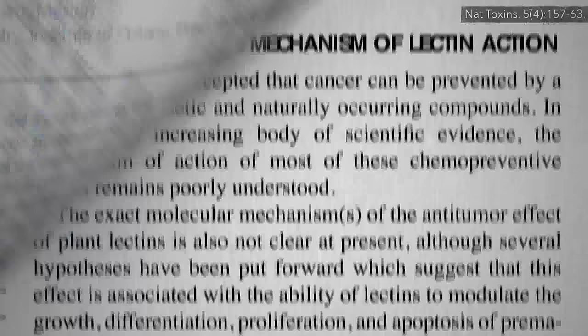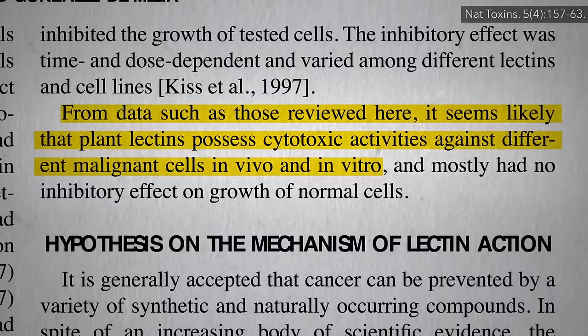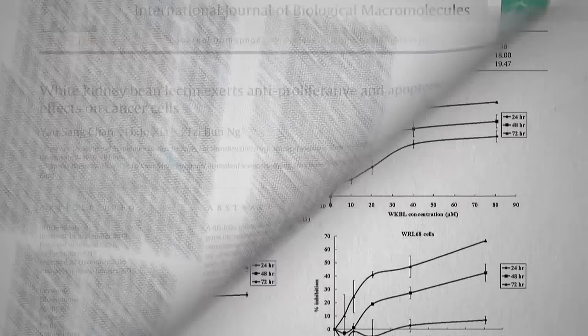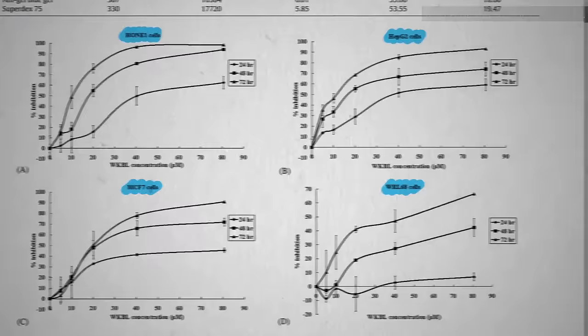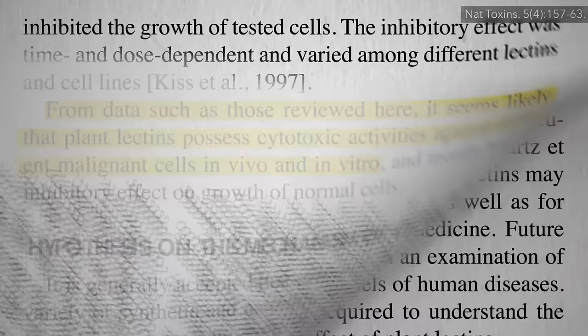Subsequently it was discovered that lectins couldn't just distinguish between the two, but extinguish the cancer cells while largely leaving the normal cells alone. For example, that same white kidney bean lectin was found to almost completely suppress the growth of human head and neck cancer cells, liver cancer cells, breast cancer cells, and at least most of the way, cervical cancer cells within about three days.